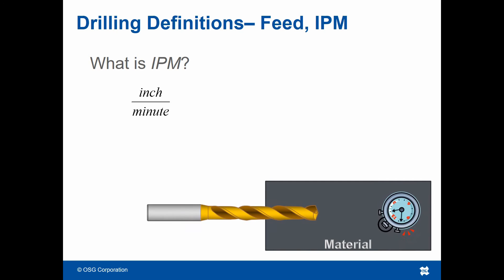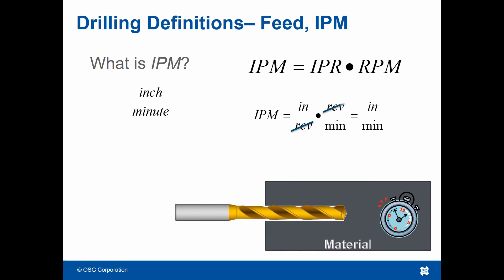To calculate IPM, you must multiply the IPR, or inches per revolution, by the spindle rotation speed, also known as RPM.